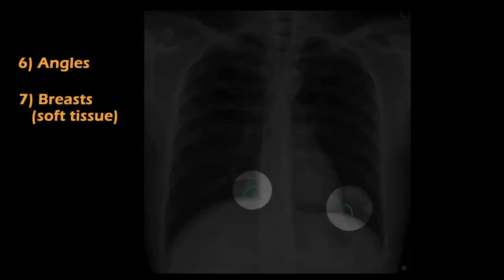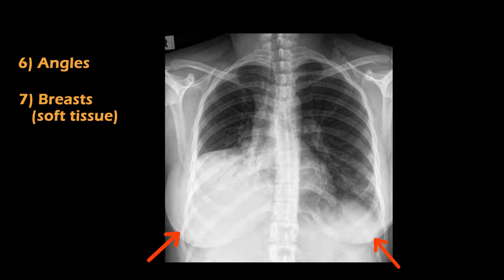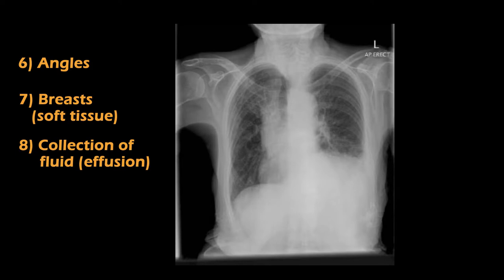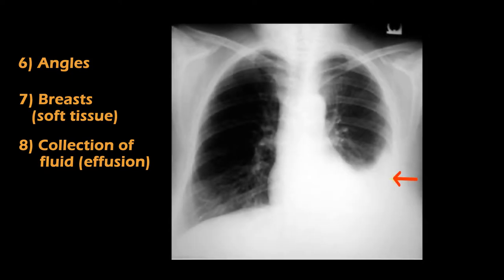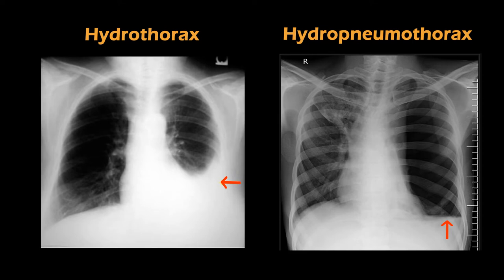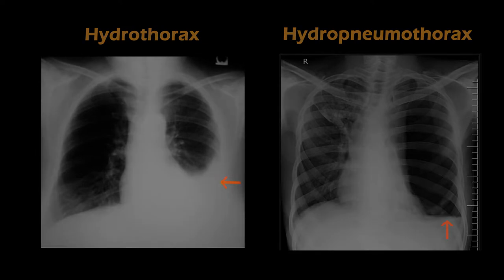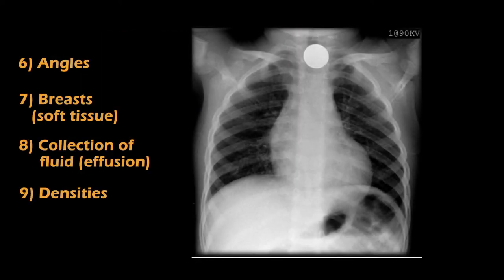B stands for breast or soft tissue shadows — this is how a breast shadow is seen. C stands for collection of fluid, referring to effusions. This is an x-ray of pleural effusion — look at the obliterated costofrenic angle. In pleural effusion, the first sign noted on chest x-ray is the obliteration of the costofrenic angles. Another important finding is hydrothorax, which is seen as a curved line; it is important to differentiate it from hydropneumothorax, which is seen as a straight line. D stands for densities — it may be an enlarged lymph node, a tumour, or any foreign body. This x-ray shows a foreign body in the chest, noted as a radioopaque density. This x-ray shows an irregular mass in the chest, which may be a tumour.